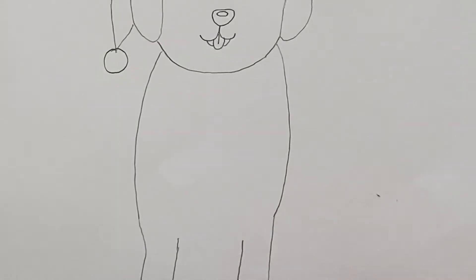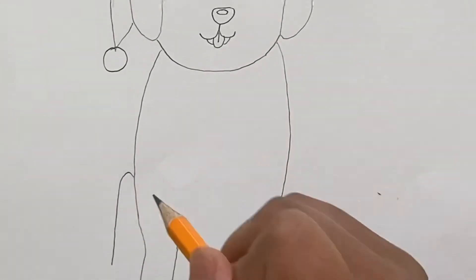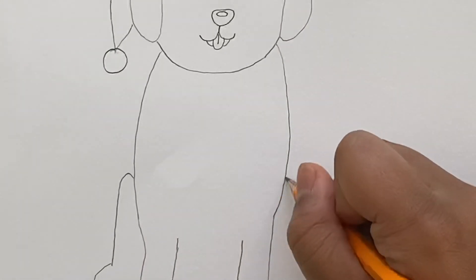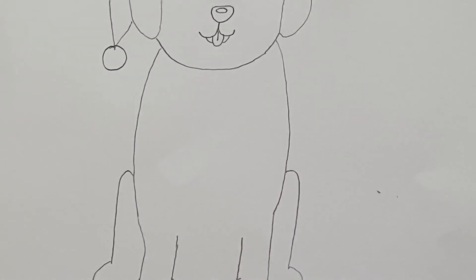And now at the bottom, we're just going to connect the body together. There, like that. Now we're going to add the back legs, so it looks like he's sitting down. We're going to do that on the other side. Just like that.